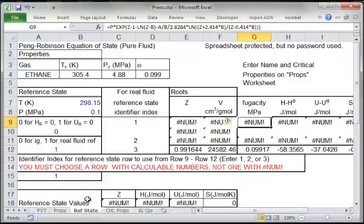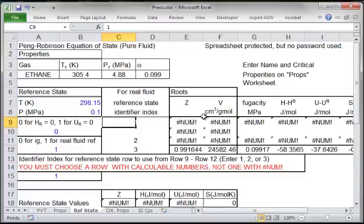If I go to the reference state page, I can see that for ethane, row identifier number 1 isn't stable calculation at this state, and in this case I want to choose row number 3.